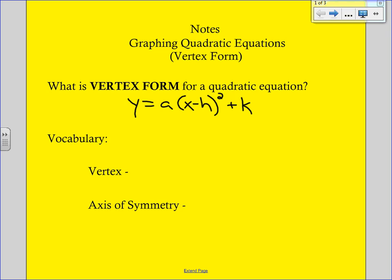Vertex form is nice because it gives us the vertex. We don't have to use that formula that we were using before. We can just get the vertex right from the equation. So the vertex is (h, k). The axis of symmetry is still going to be that line right down the middle of the parabola that will contain the vertex.